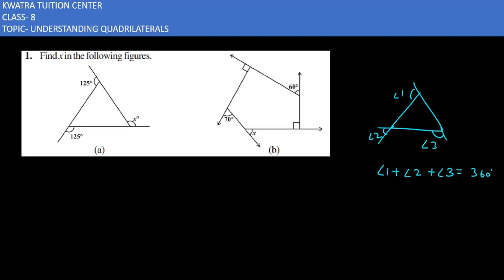The sum of exterior angles is 360 degrees. In the first part you can see there are three exterior angles: 125 degrees, second is 125 degrees, third one is x degrees. So 125 plus 125 plus x equals 360. 125 plus 125 is 250 degrees plus x equals 360.